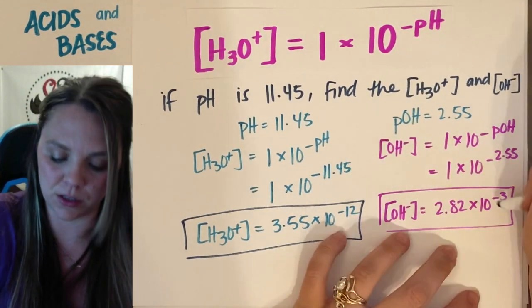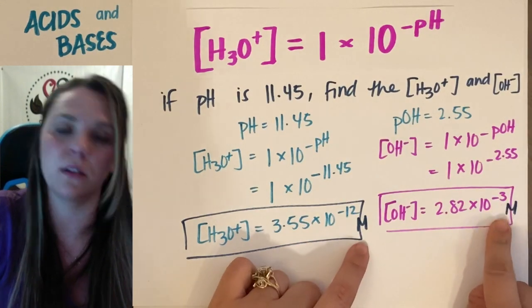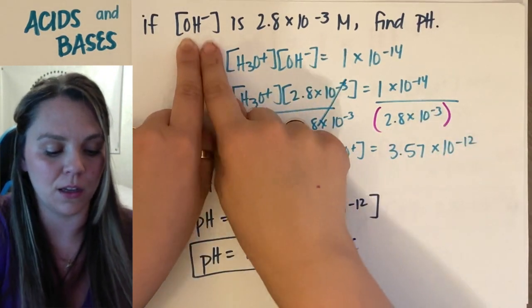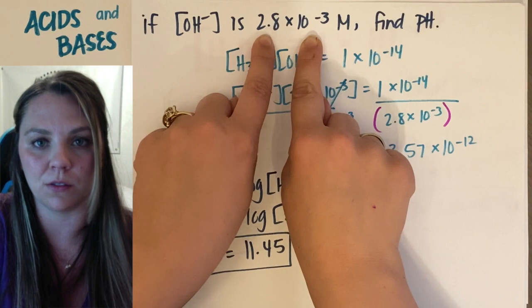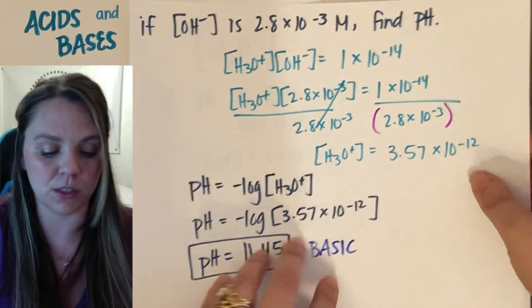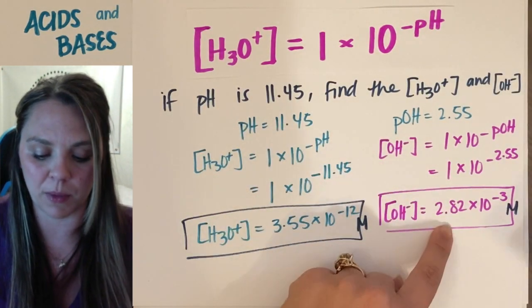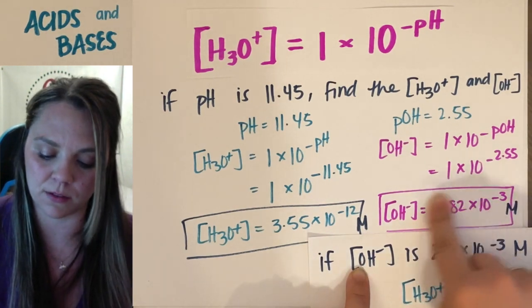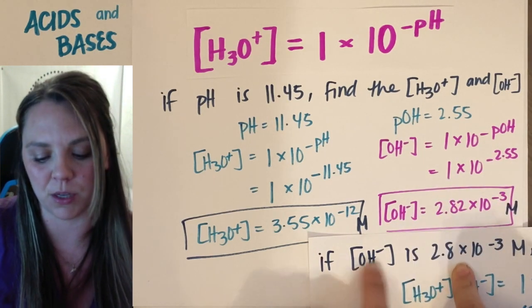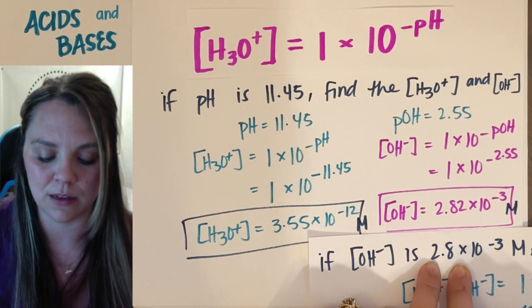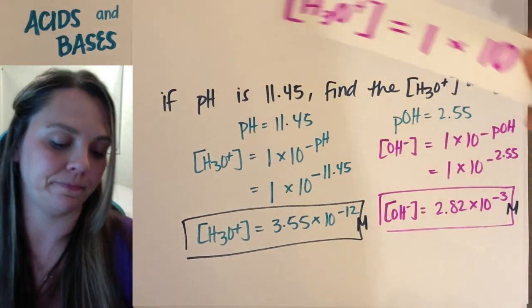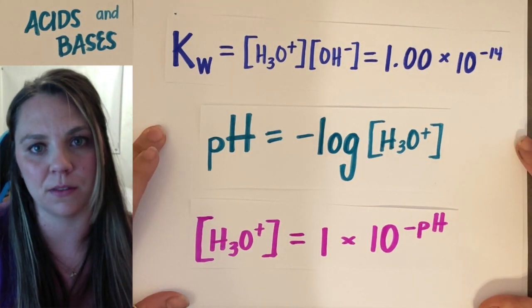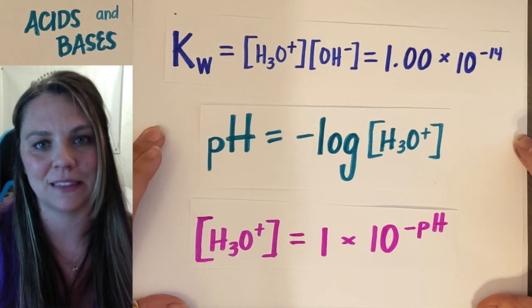Looking back at our original question — [OH⁻] = 2.8 × 10⁻³ — we used it to find pH = 11.45, then worked backwards to find [OH⁻] = 2.82 × 10⁻³, which confirms we got the right answer. That's a lot of information across these three equations. You have to know how to calculate all three — lots of practice with this. Good luck.